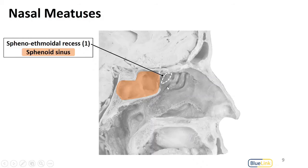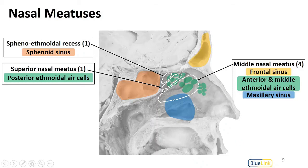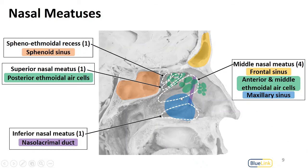Starting with the sphenoid sinus, outlined here in orange, it drains into the sphenoethmoidal recess, which receives only from the sphenoid sinus. The superior nasal meatus receives from the posterior ethmoidal air cells. The middle nasal meatus has a lot of drainage within it — from the frontal sinus, both the anterior and middle ethmoidal air cells, as well as the maxillary sinus.